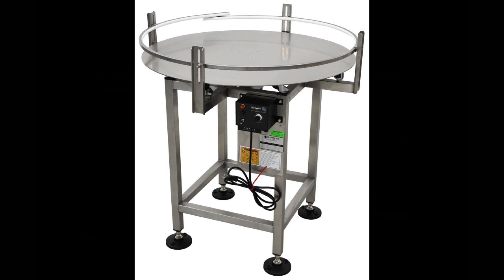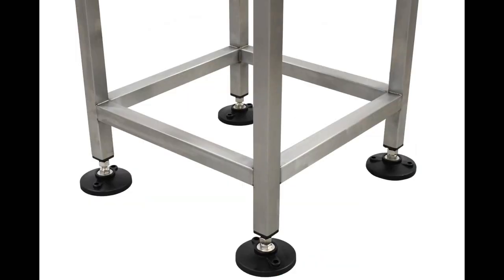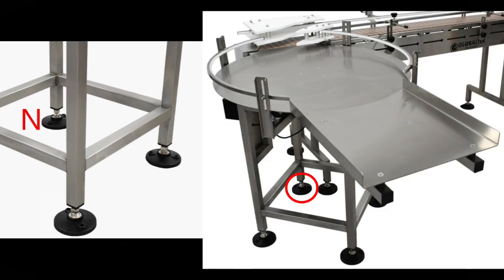To begin installing your infeed table, it is best to envision the base of the accumulation table as a diamond, with the legs oriented and positioned towards north, south, east, and west. North being the foot positioned towards the transfer plate on the conveyor, while south is the foot positioned where the infeed table attaches to the accumulation table.